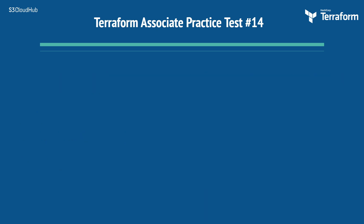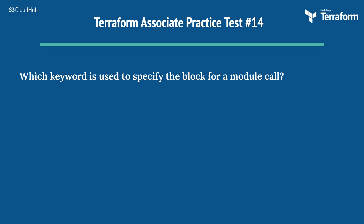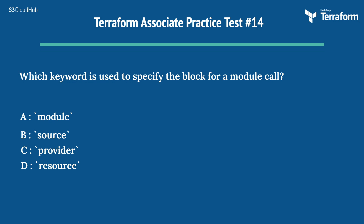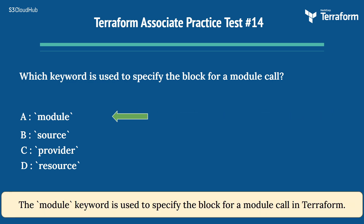The fourteenth question: which keyword is used to specify the block for a module call? Options are: A) module, B) source, C) provider, D) resource. The right answer is Option A, module. The module keyword is used to specify the block for a module call in Terraform.